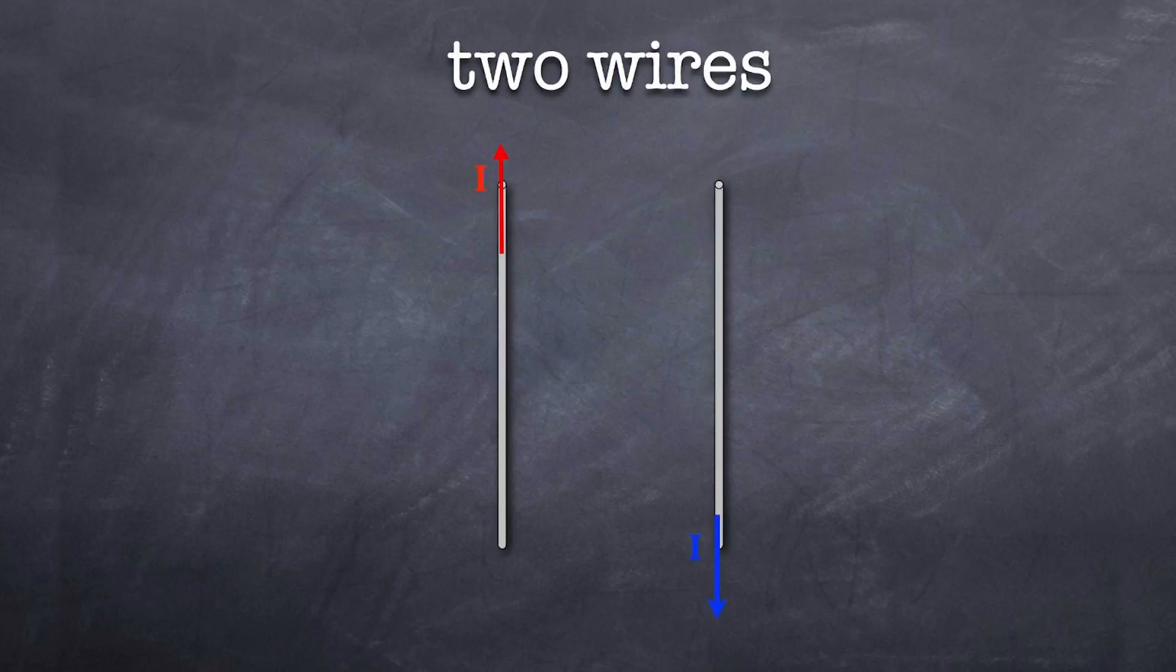Now let's examine the situation where the currents are in the opposite direction. Again, the magnetic fields of both the red and the blue are shown. You'll notice too, by the way, that the magnetic field between the two wires is now stronger because they're all going in the same direction.